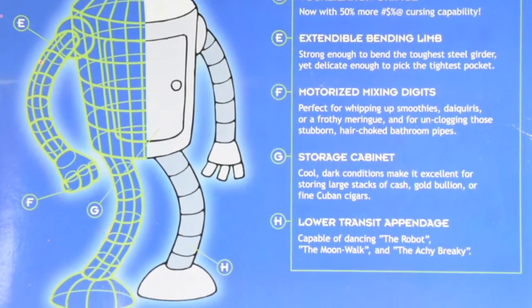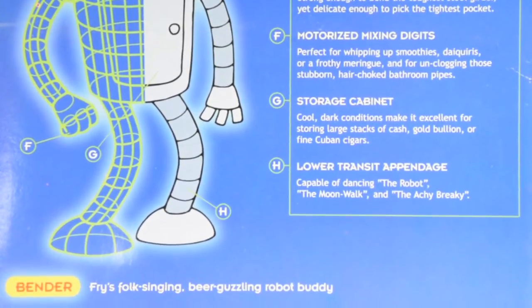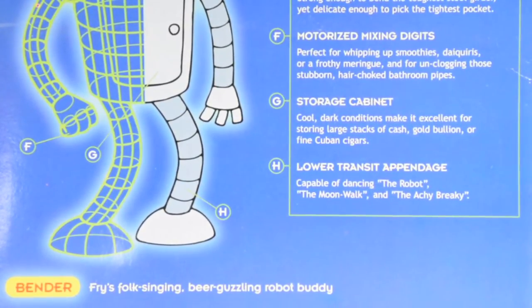Vocalizing orifice, extendable bending limb, motorized mixing digits, storage cabinet, lower transit appendage. And feel free to pause and read the little descriptions.